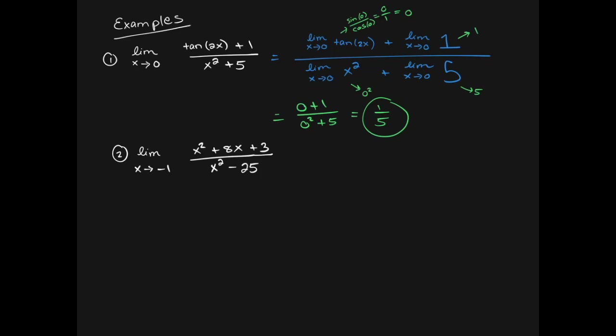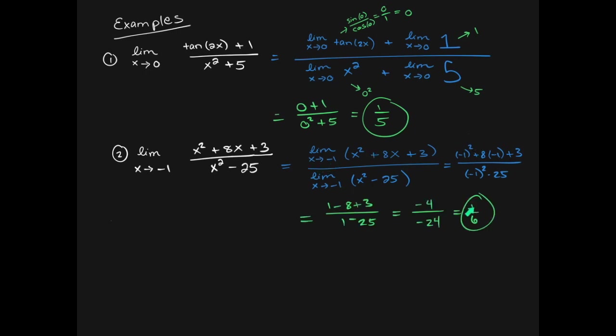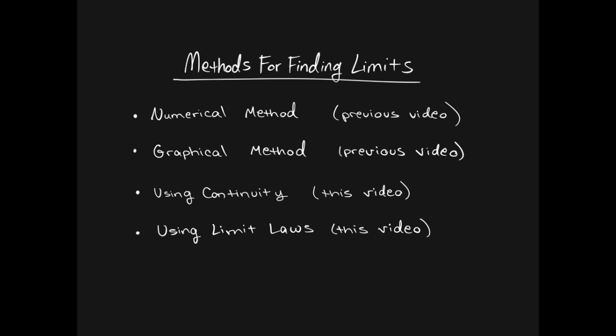One more example: using limit laws and the fact that polynomials are continuous, we plug in x approaching negative one and get one sixth. To summarize: the graphical method requires you to know the graph; the numerical method is tedious. Continuity and limit laws let you just plug in numbers as long as you don't get zero in the denominator. Challenge yourself with more problems in the book, check out the homework online, and we'll see you in class soon.